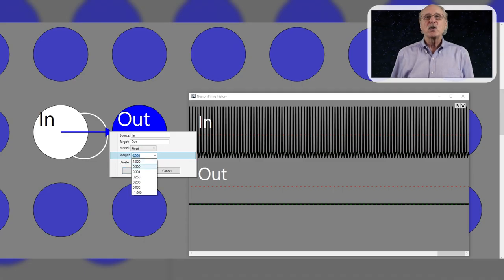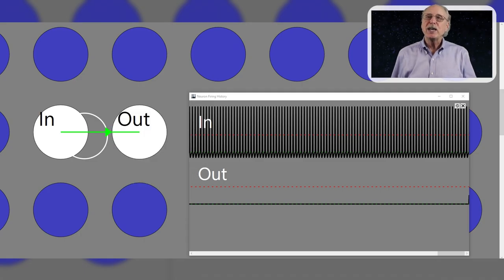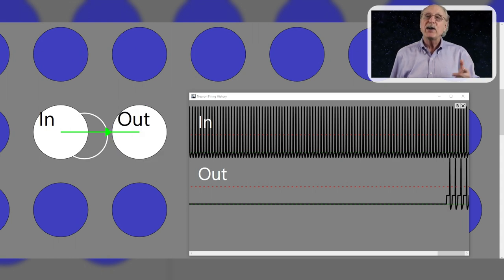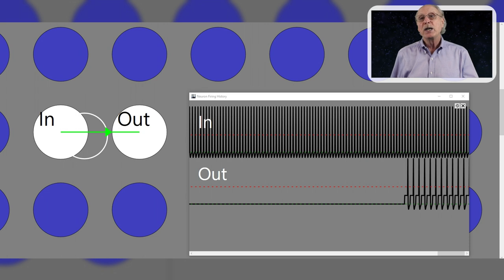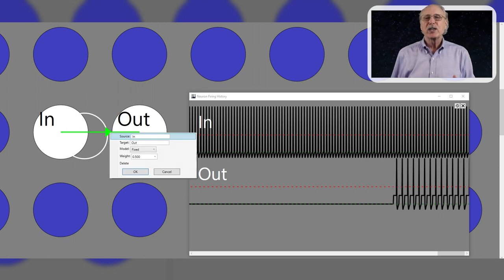By connecting a source neuron to a target through a synapse weight of 0.5, the target neuron will fire at half the rate of the source. In fact, it will divide by two for any weight between 0.5 and 1, so the precise synapse weight is not critical.